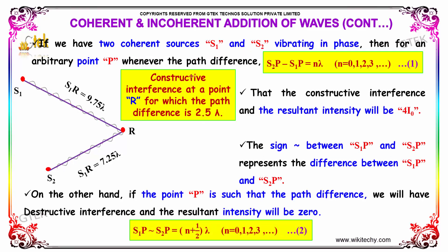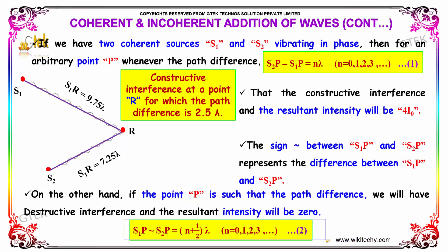If we have two coherent sources S1 and S2 vibrating in phase, then for an arbitrary point P, whenever the path difference S2P minus S1P equals n lambda, there is constructive interference and the resultant intensity will be 4I₀. On the other hand, if the point P is such that the path difference equals (n + ½)λ, there will be destructive interference and the resultant intensity will be 0.